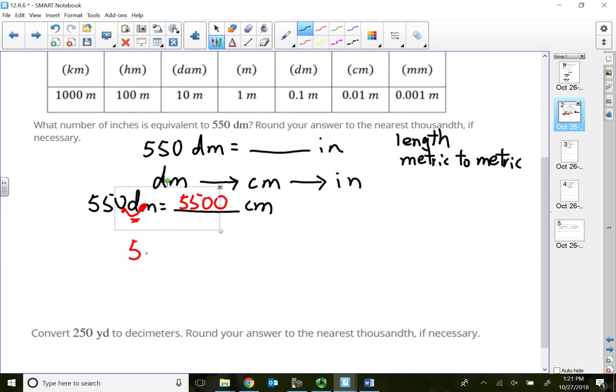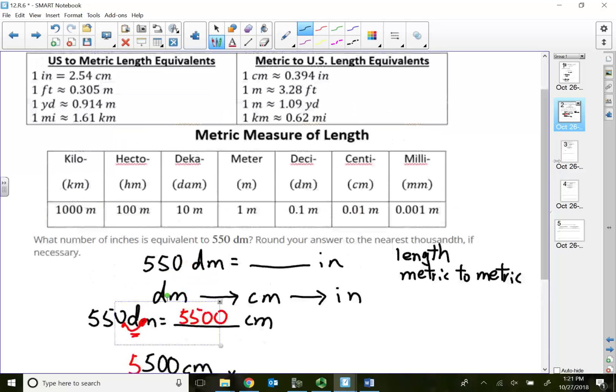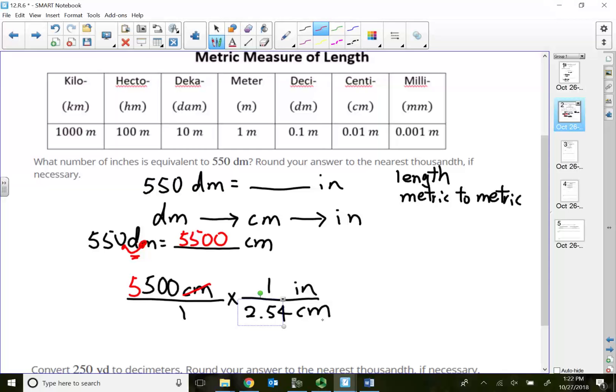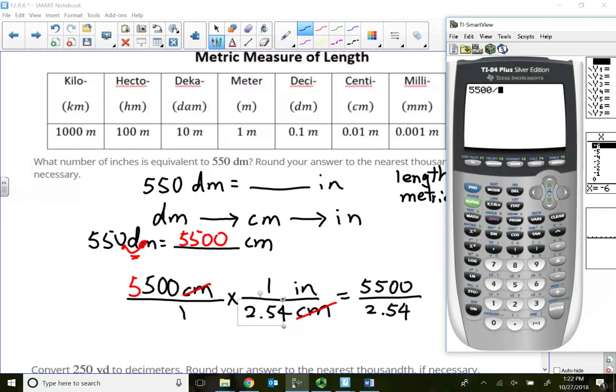Times another fraction, put my centimeters down here. Now I can use centimeters to convert to inches, which is 2.54 centimeters for one inch. The centimeters will cancel each other out, so this problem is 5,500 divided by 2.54. Let's see, round to the nearest thousandth - that would be 2,165.354 inches.